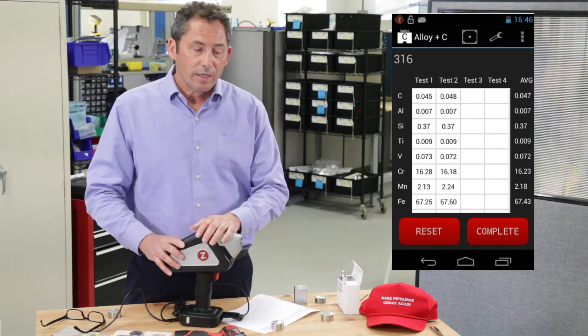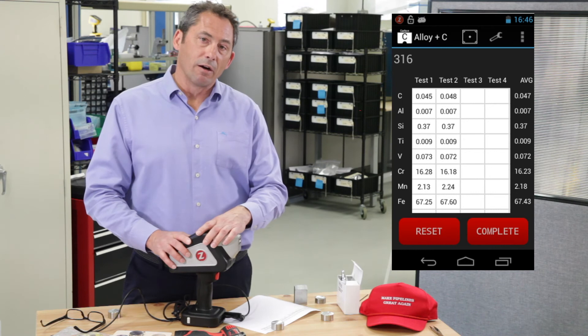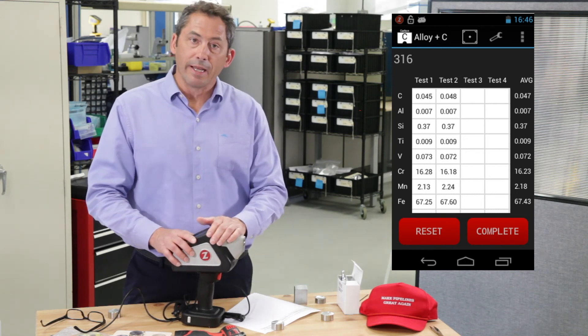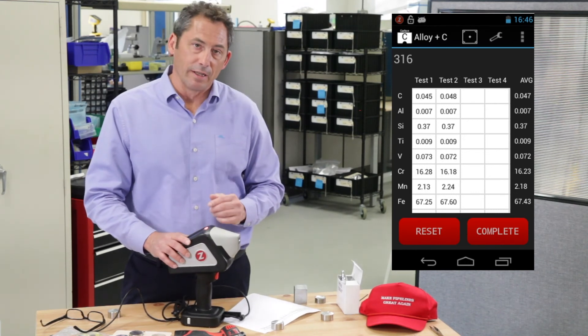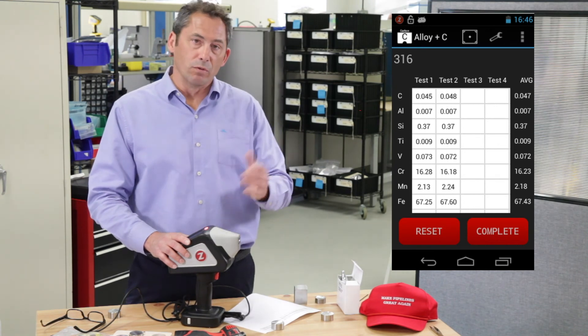Our customers are doing their PMI for carbon in a fraction of the time it used to take them with a spark OES with this nice little handheld. This just gets them about another factor of two in throughput.